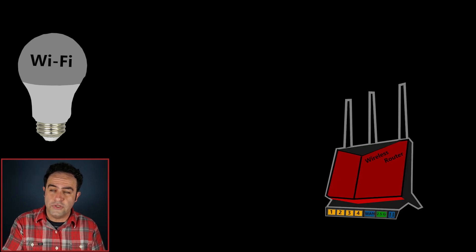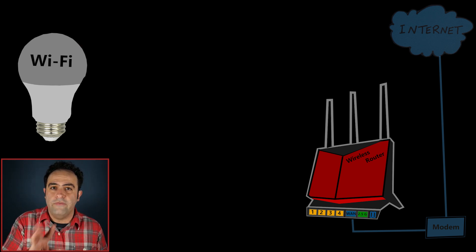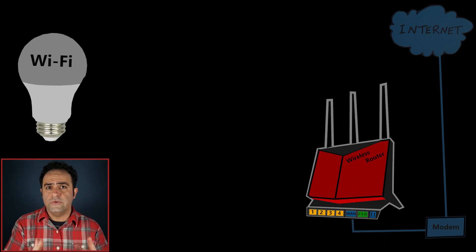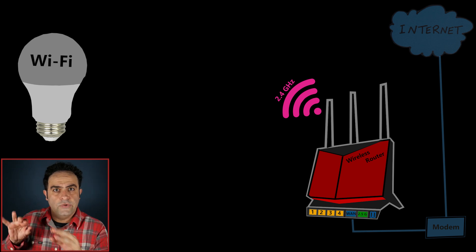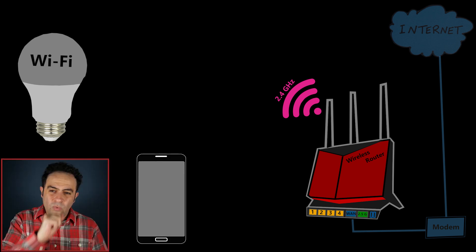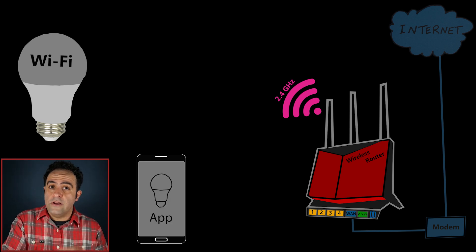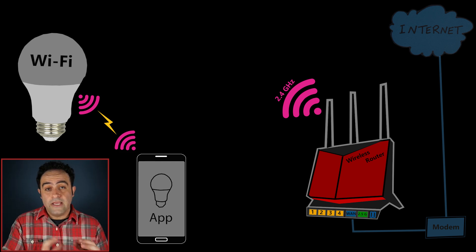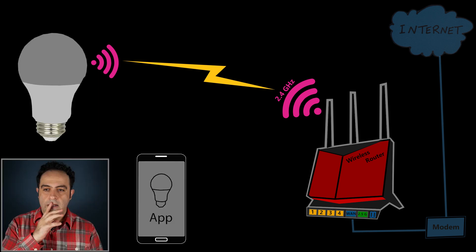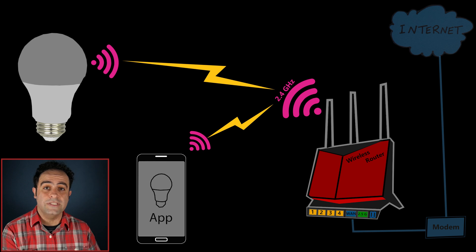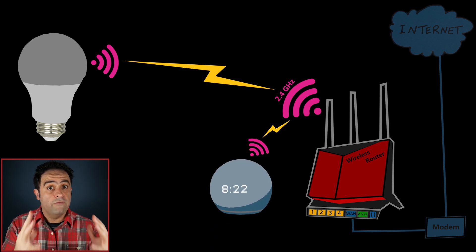Wi-Fi smart devices usually use the 2.4 gigahertz band to connect to the network, and not the 5 gigahertz band — at least not right now. So if I want to connect my smart LED light bulb to the network, I need to enter my 2.4 gigahertz Wi-Fi name and password on the light bulb so it can connect. I can use my smartphone to do that. Each manufacturer might use a slightly different method, but what usually happens is that I install the light bulb app on my phone and then connect my phone to the default Wi-Fi of the light bulb. This allows me to enter my 2.4 gigahertz Wi-Fi name and password, and the light bulb uses this information to connect. After it is successfully connected, I can control it using the app on my phone, or if it supports one of those virtual home assistants — maybe Amazon Alexa — with voice commands too.